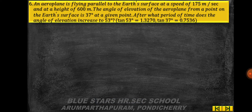Problem 6: an aeroplane flying parallel to the earth's surface at 175 m/s at a height of 600 m. The angle of elevation from a point on the ground is 37°. After what period of time does the angle of elevation increase to 53°? (tan 53° = 1.3270, tan 37° = 0.7536.)